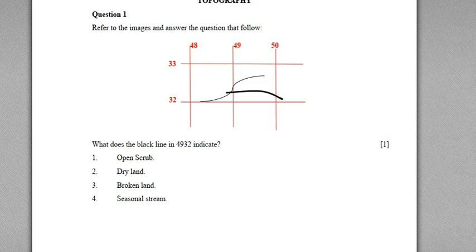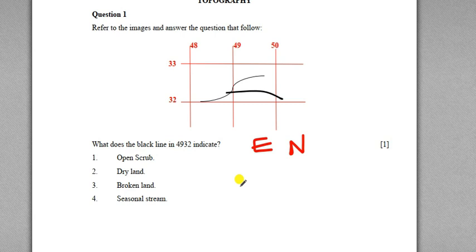The student should identify the grid square numbered 4932. To recollect: whenever we write a grid reference, we write the eastings first and the northing second. To remember this — some students may have confusion — just keep in mind that it follows alphabetical order. E comes before N, so eastings come before northings. The easting located on the left side of the given location is taken, and the northing located directly below it.